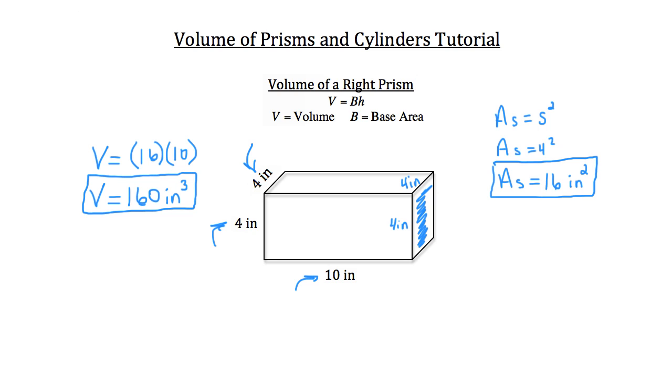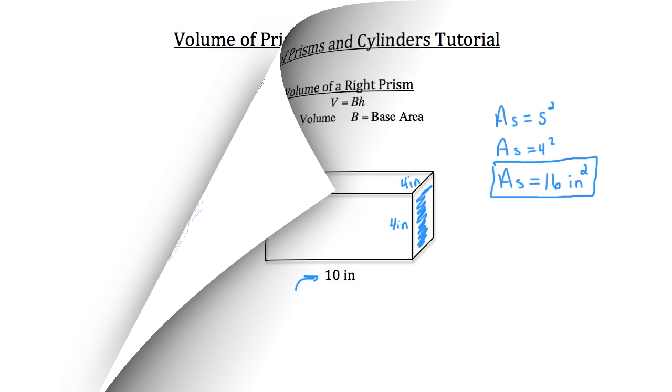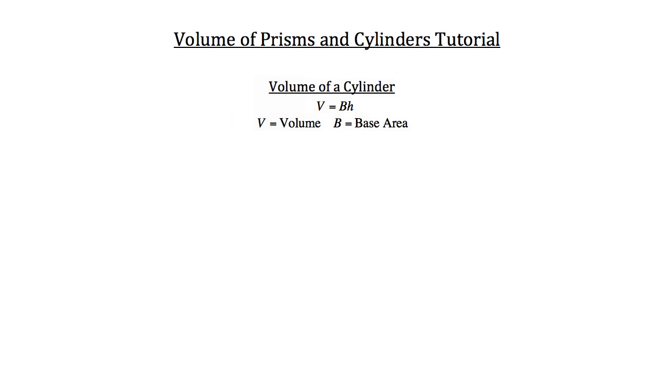Now let's move on to calculating the volume of a cylinder. The formula to calculate the volume of a cylinder is volume equals the area of the base times the height of that cylinder.